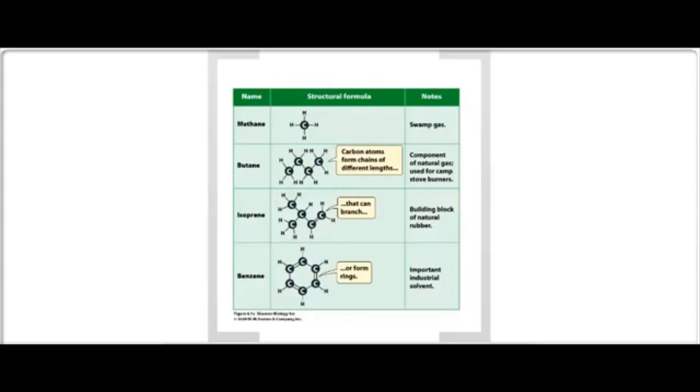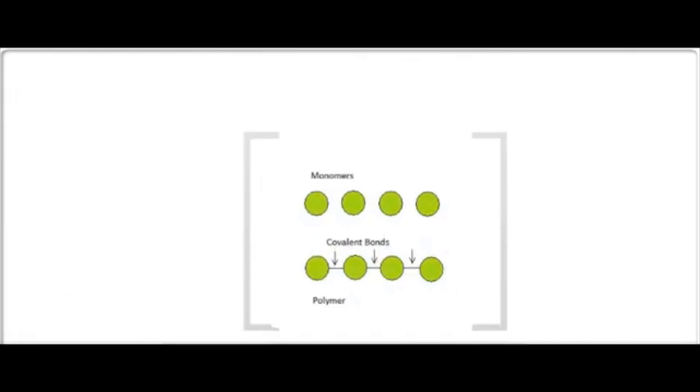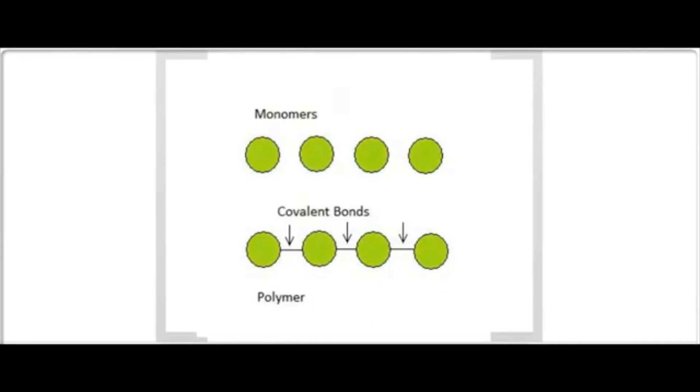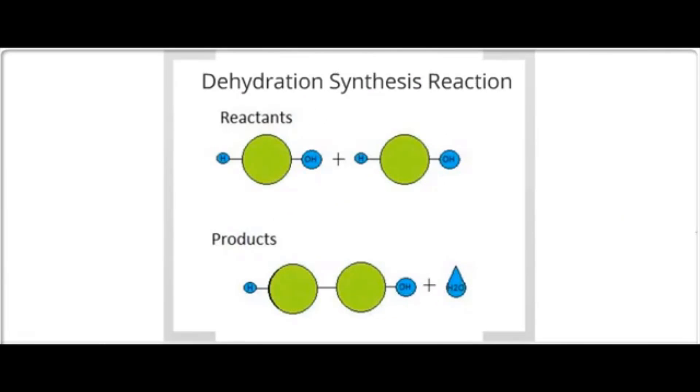We will be talking about the different categories of macromolecules in lecture. But I would like to spend some time talking about how cells build up and break down macromolecules. Each type of macromolecule has its own type of building blocks or monomers. These monomers can be linked together with covalent bonds through a chemical reaction known as a dehydration synthesis reaction.